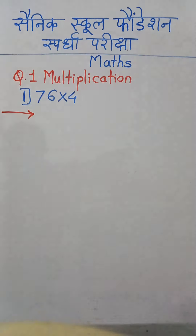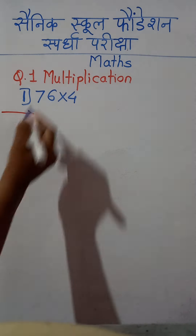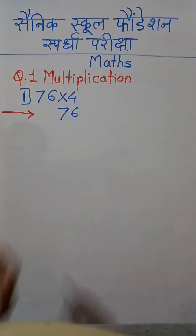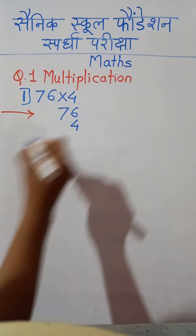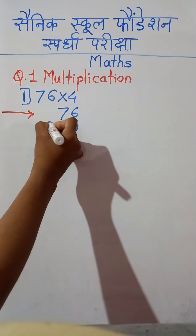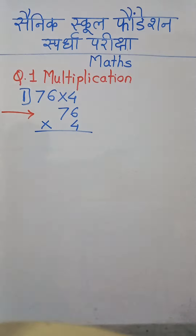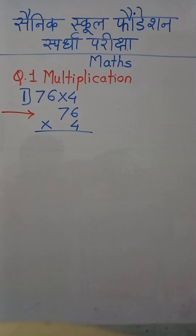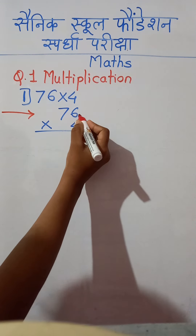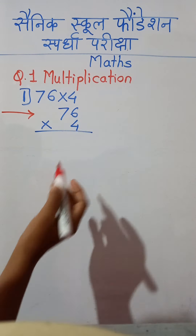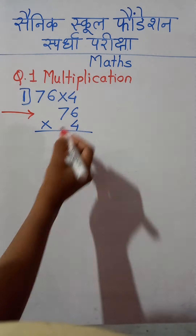We will write this example vertically. We write 76, then write 4 below the 6 at the units place digit, and give the sign of multiplication. Now start doing this multiplication from the units place digit — that is, we have to multiply the complete number 76 by 4.